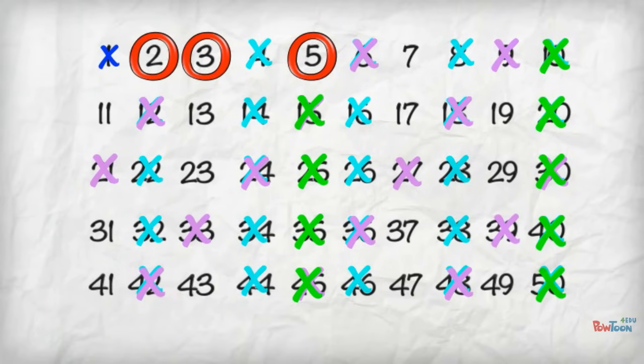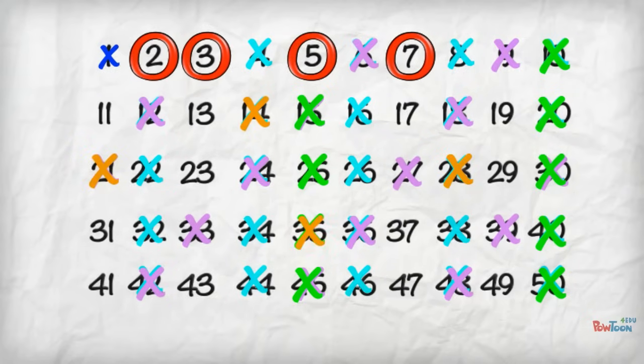You can see that the next prime is 7. Get rid of its multiples. 14, 21, 28, 35, 42, 49.